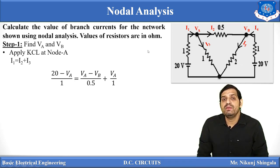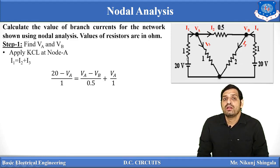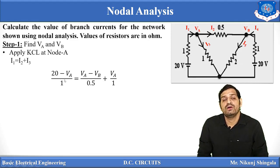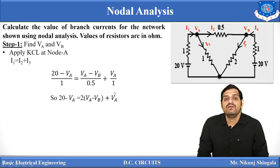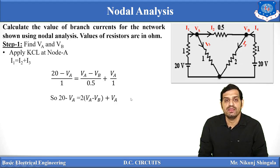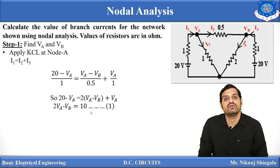The key point to remember is to consider the direction of current flow when writing the V/R equations. Solving the KCL equation at node A gives: 2VA − VB = 10. This is equation number 1.